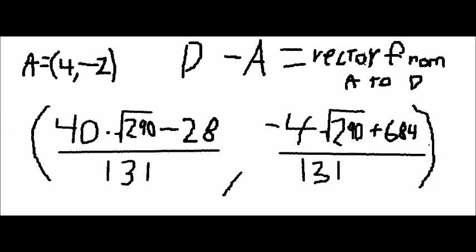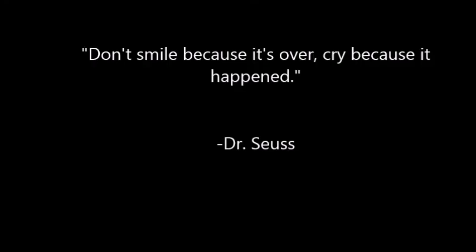Subtract point A from point D to find the vector from A to D. This leaves us with the vector from A to D being ((40√290 - 28)/131, (684 - 4√290)/131). Thank you so much for listening.